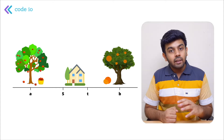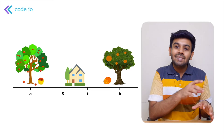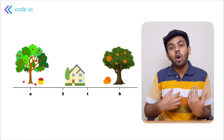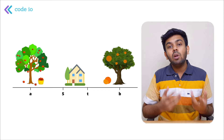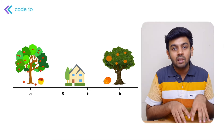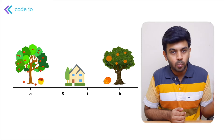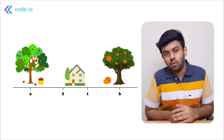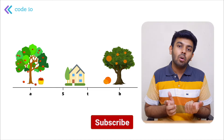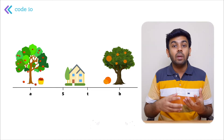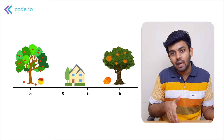For each fruit, they give you the distance it falls from the tree. So for apples, you get M distances from the apple tree, and for oranges, N distances from the orange tree. You calculate the exact position where each fruit falls. For example, if the apple tree is at position 5 and an apple falls 2 units from it, the apple lands at position 7 — 5 plus 2.